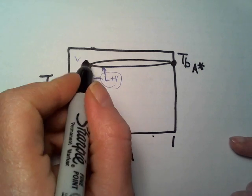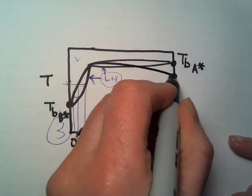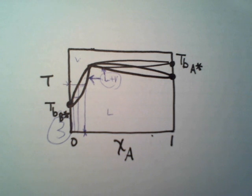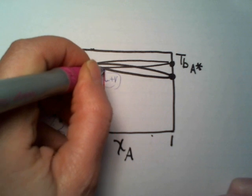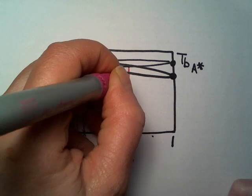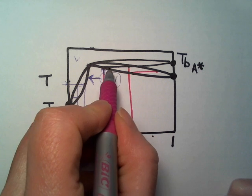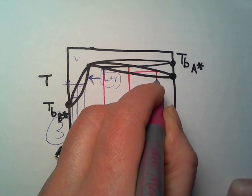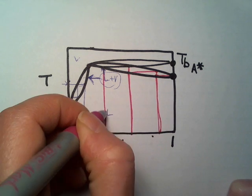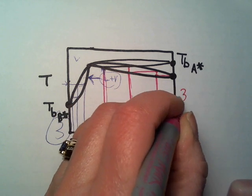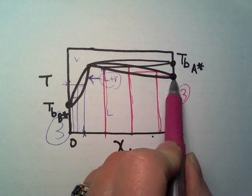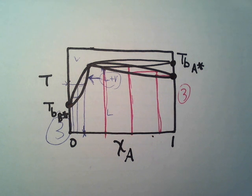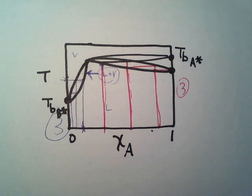Starting on the other side of the maximum — I'll trace up, over, down, up, over, down, and up, over — that's also three steps on this side as well, and this isolates the lower boiling point liquid of these two. So the product of the distillation is always the lower boiling point liquid, whether your chart shows a minimum boiling point, a maximum boiling point azeotrope, or an ideal solution.